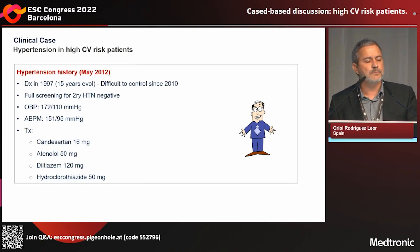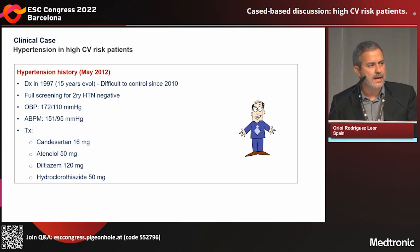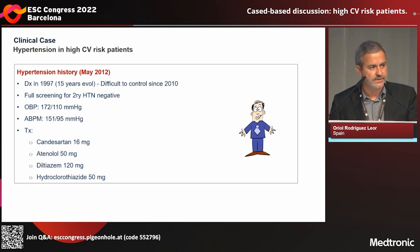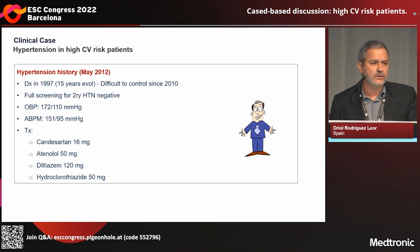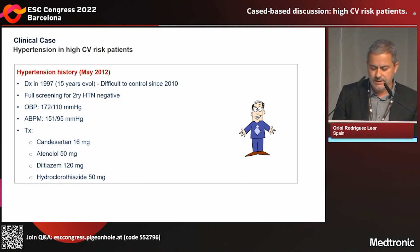The hypertension history was diagnosed 15 years ago and became difficult to control for the last two years. We performed a full screening of secondary hypertension causes that was negative. When we visited the patient in the clinic, the systolic blood pressure was 172 and diastolic blood pressure 110. Ambulatory blood pressure monitoring showed 151 systolic and 95 mmHg diastolic blood pressure. At that time, the patient was on four different antihypertensive medications.